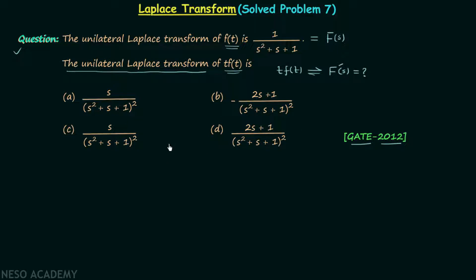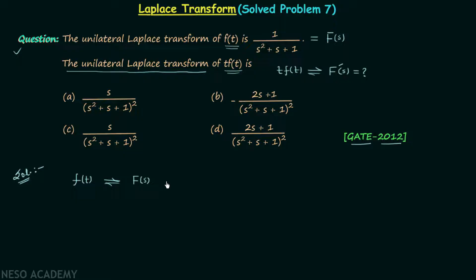This question is easy because you can solve it quickly if you know the differentiation in frequency property. First we will revise the differentiation in frequency property of the Laplace transform and then solve the question. According to this property, if we have a time domain signal f(t) with Laplace transform F(s), the property holds for both bilateral and unilateral Laplace transforms — it remains the same for both.